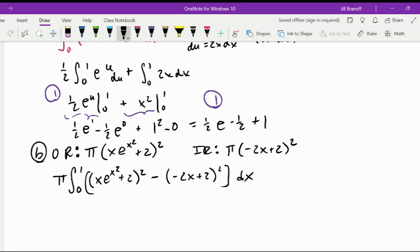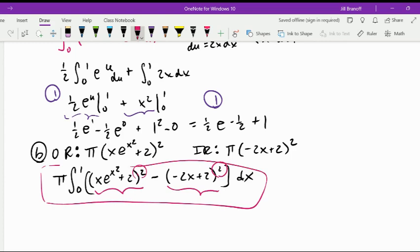This part is worth three points. You get two points for your integrand. Please remember that you have to do the outer squared minus the inner squared. You can't do outer minus inner and then square the whole thing. So if you write your integrand properly, then that's two of your points.